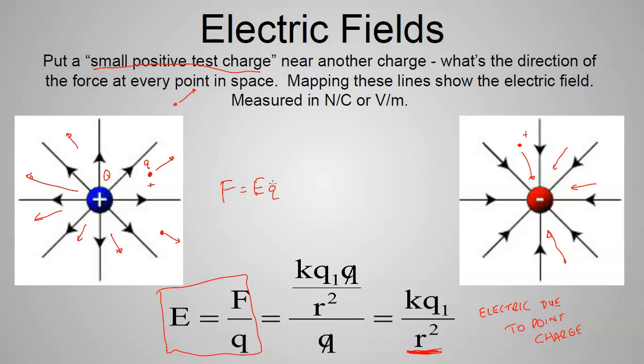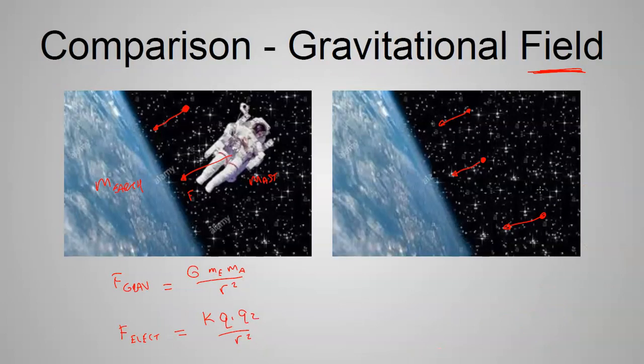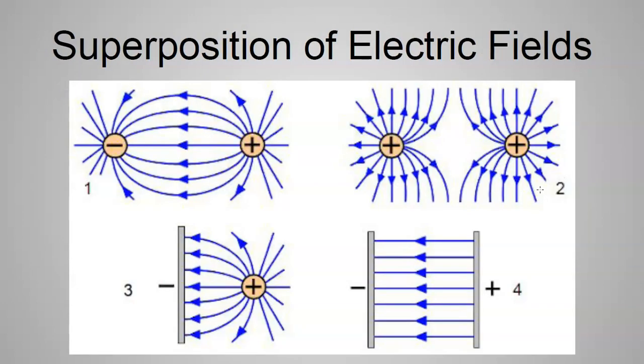From the field line maps: a positive charge means everything is directed outward; a negative charge means everything is pulled toward that point. We get the magnitude from the formula and the direction by placing an imaginary small positive test charge and thinking about whether it would be attracted or repelled by the existing charge.